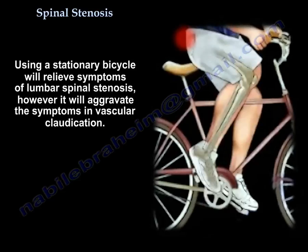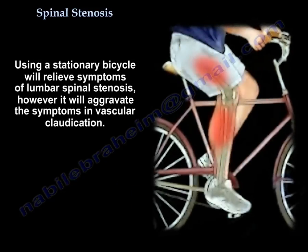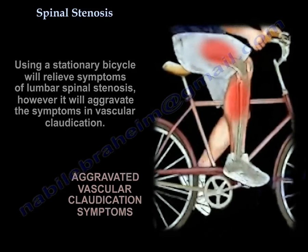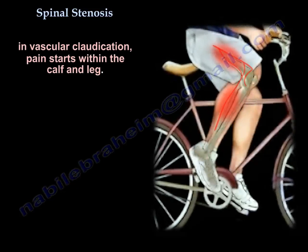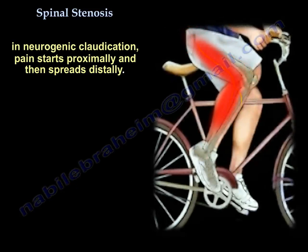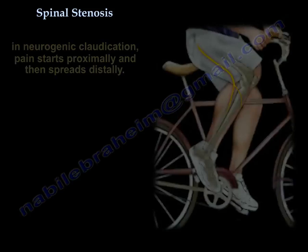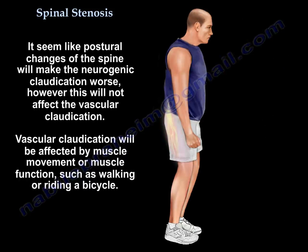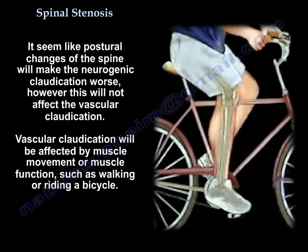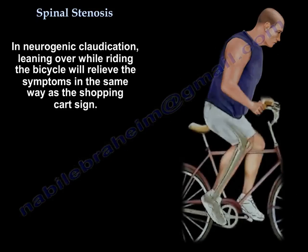Riding a bicycle will relieve symptoms for lumbar stenosis but aggravate vascular claudication. In vascular claudication, pain starts in the calf and leg. In neurogenic claudication, pain starts proximally and spreads distally. Postural changes of the spine worsen neurogenic claudication but do not affect vascular claudication. In neurogenic claudication, leaning forward while riding a bicycle relieves symptoms in the same way as the shopping cart sign.